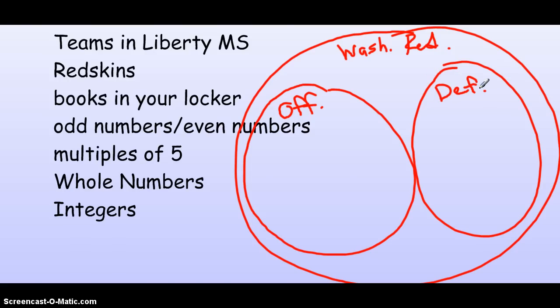So if I were to say cut the team in half, that would give me offensive players and defensive players. And so these are examples of subsets. The offensive players is a subset of the Washington Redskins. And the defensive players is a subset of the Washington Redskins.